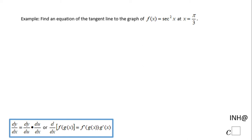Welcome or welcome back. I need help at C squared. In this example, we need to find an equation of the tangent line to the graph of f of x equals secant squared of x at x equals pi over 3. For finding an equation of the tangent line,